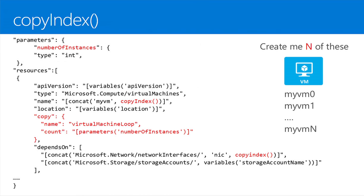Another common one is copy index. People will want to create N of something — a four-node cluster, six storage accounts, whatever. Instead of copy-pasting that same resource block N times, you use copy index. You pass in as a parameter how many instances you want, name them with the index — zero to N — add a copy block with a name like 'virtualMachineLoop' and a count matching your parameter. You'll end up with N virtual machines and corresponding network cards.